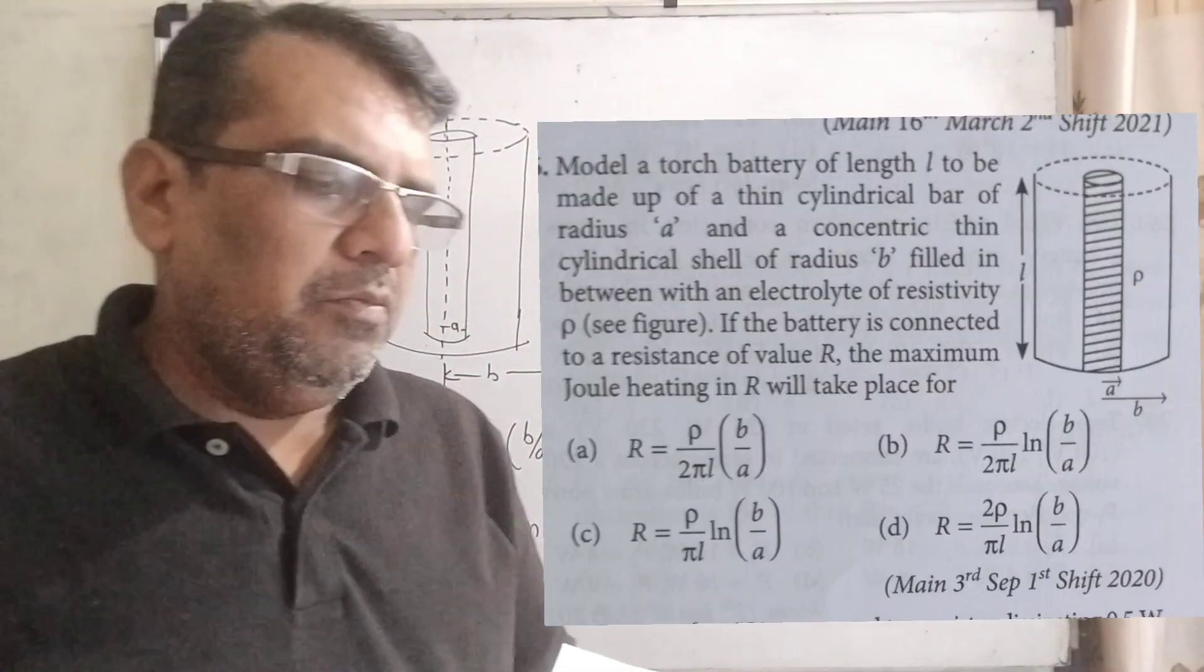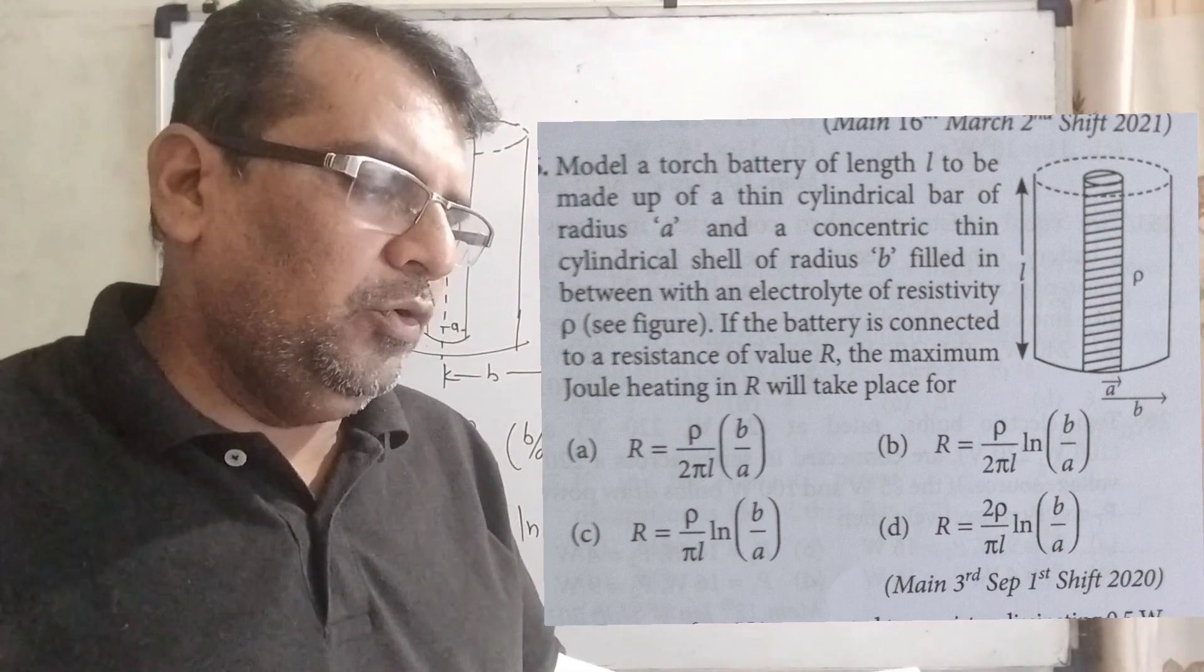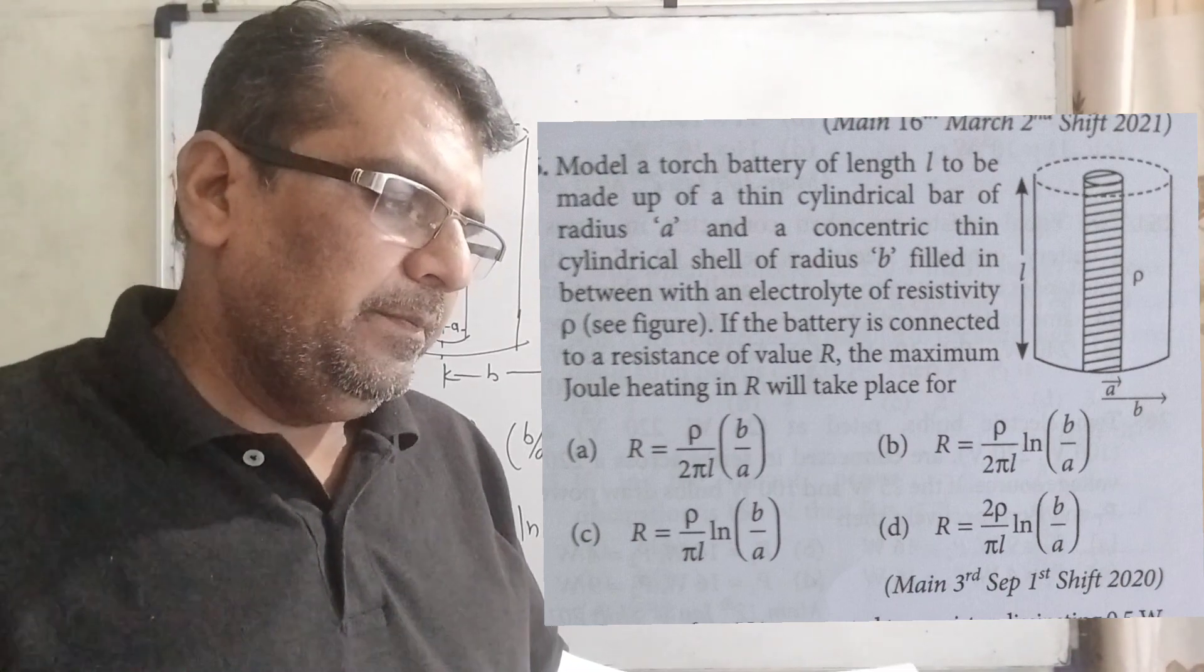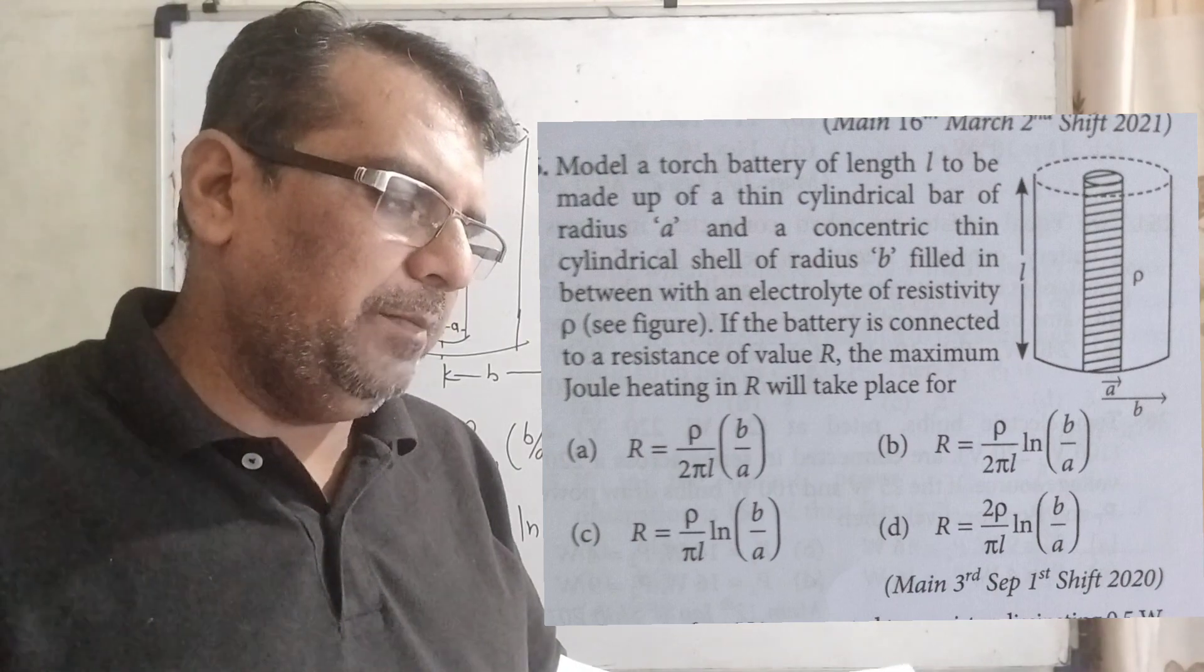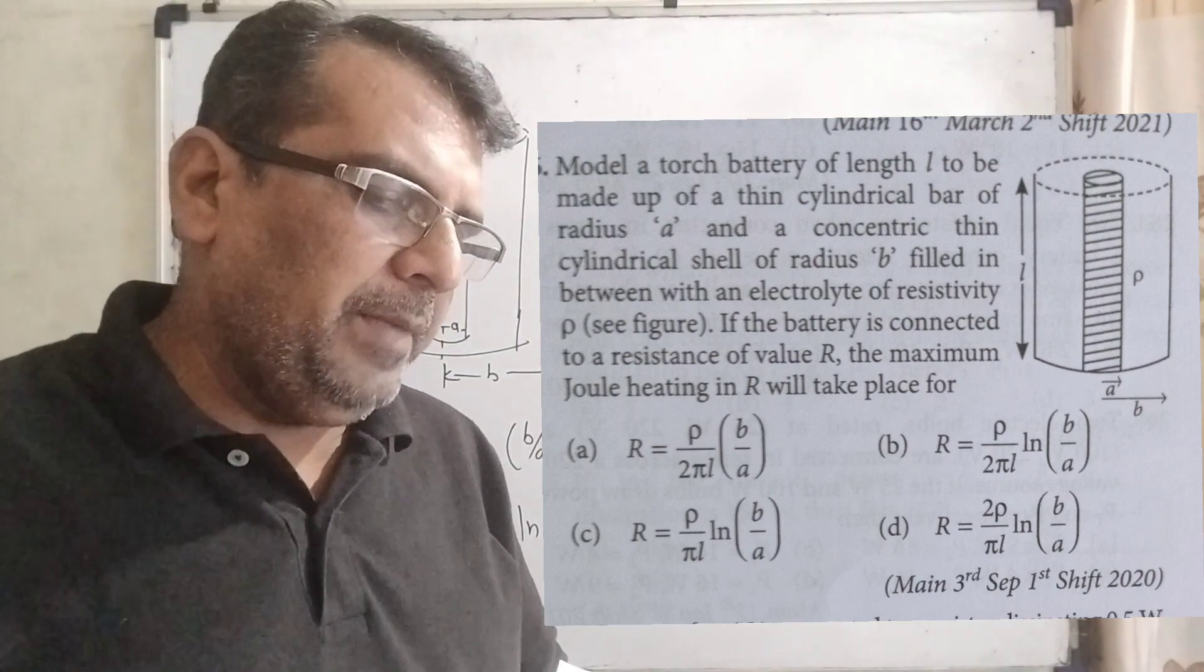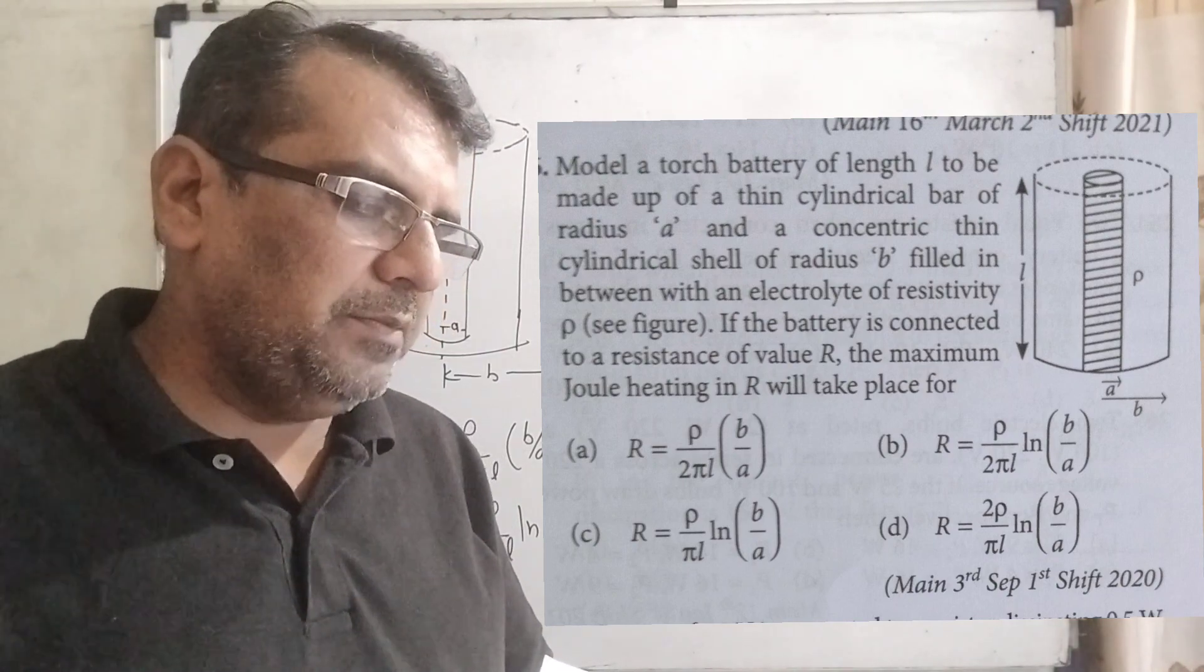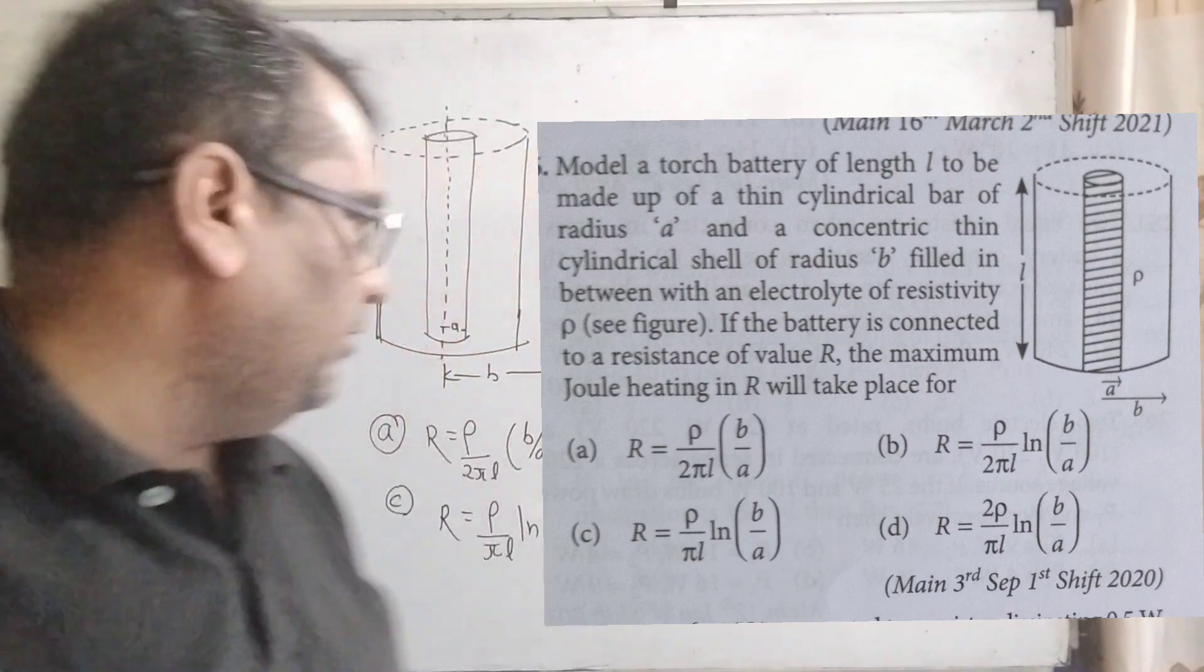Here's what the question says. Model a torch battery of length L to be made up of a thin cylindrical bar of radius A and a concentric thin cylindrical shell of radius B, filled in between with an electrolyte of resistivity rho. If the battery is connected to a resistance of value capital R, the maximum joule heating in R will take place for... you have given four options.